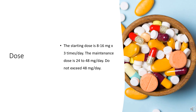Elderly patients should use beta-histine 16 mg with caution; consult your doctor before taking this medicine. Beta-histine is not recommended for use in children and adolescents under 18 years of age due to lack of adequate studies and lack of data on safety and efficacy.